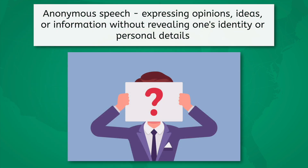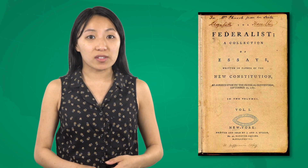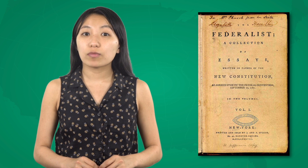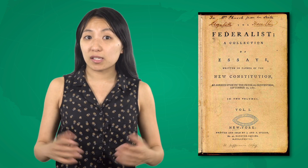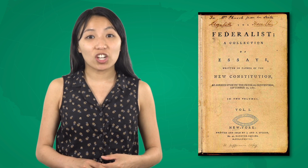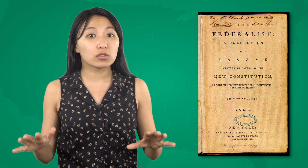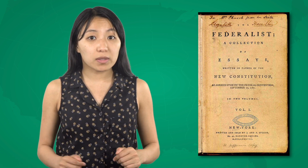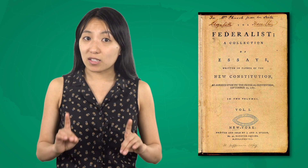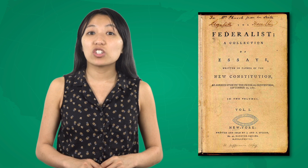Anonymous speech means expressing opinions, ideas, or information without revealing one's identity or personal details. This includes things like anonymous online comments or masked protests. Anonymous speech is protected because it allows individuals to express controversial or unpopular opinions without fear of retribution or harassment. For example, the Federalist Papers, a series of influential essays advocating for the ratification of the United States Constitution, were written anonymously by Alexander Hamilton, James Madison, and John Jay. However, anonymous speech is not an absolute right — there are some situations where the government can require individuals to disclose their identity.